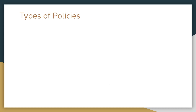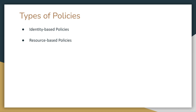There are several types of policies. The first is identity-based policies, which grant permissions to an identity. You can attach managed and inline policies to IAM identities such as users, groups, or roles. We also have resource-based policies, where you can attach inline policies to resources. The most common examples are Amazon S3 bucket policies and IAM role trust policies. Resource-based policies grant permissions to the principal specified in the policy.